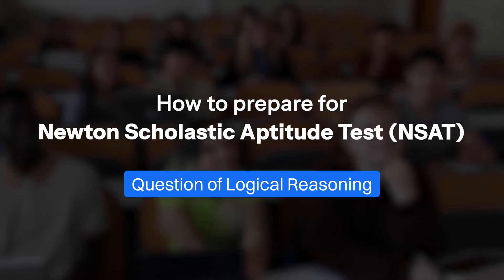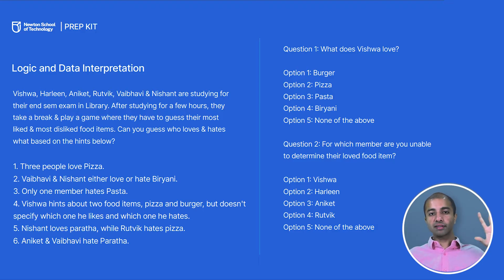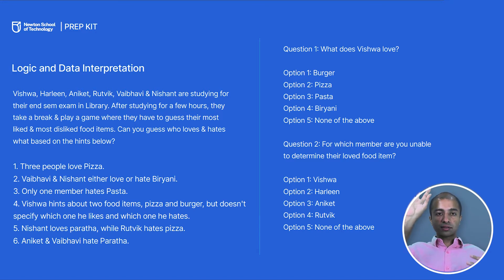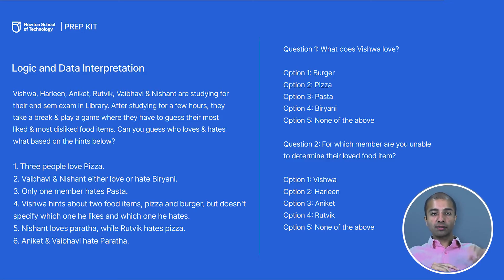Now let's try a few questions, starting with logical reasoning. Six students — Vishwa, Harleen, Aniket, Rutvik, Vardhan, and Nishan — have just finished an exam and are sitting in the library gossiping. We need to determine who loves or hates which food item based on given hints. Everyone loves one item and hates one item.